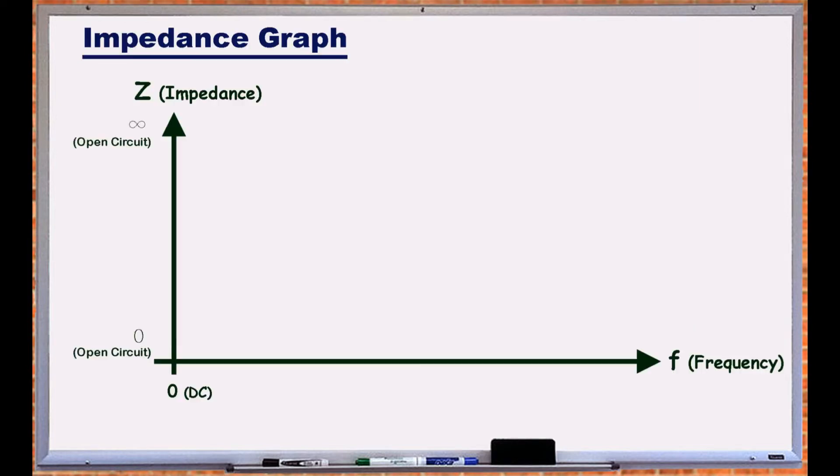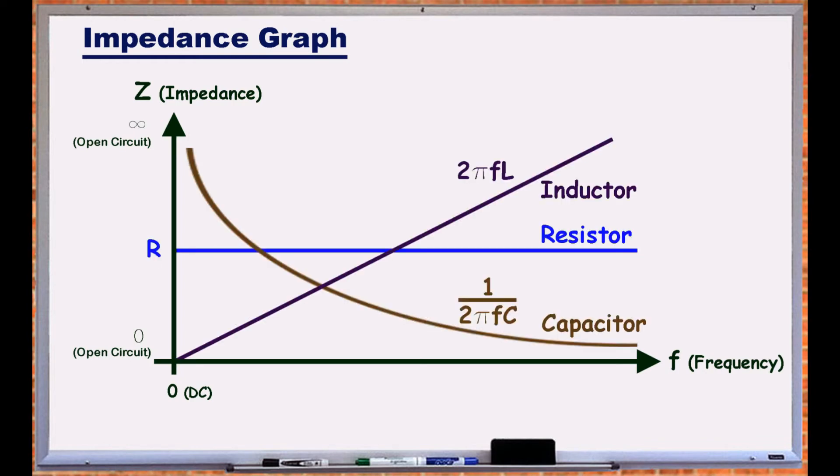This graph summarizes the impedance behavior of resistors staying constant, capacitors falling, and inductors rising with increasing frequency.